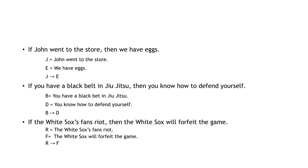Let's be really clear about what we mean by the conditional. Let's go through a few examples. First: 'If John went to the store, then we have eggs.' J = John went to the store; E = we have eggs; J → E. Second: 'If you have a black belt in jujitsu, you know how to defend yourself.' B = you have a black belt in jujitsu; D = you know how to defend yourself; B → D. Third: 'If the White Sox fans riot, then the White Sox will forfeit the game.' R = the White Sox fans will riot; F = the White Sox will forfeit the game.